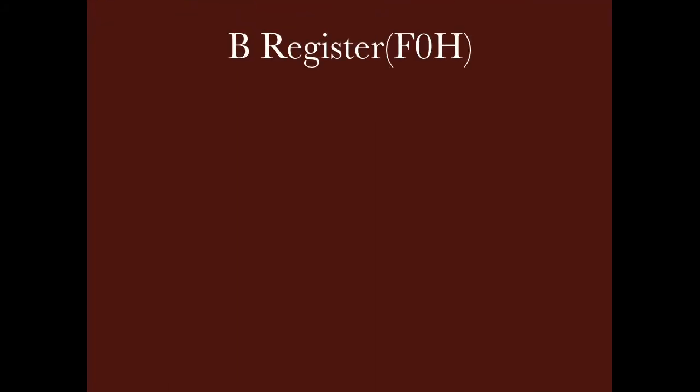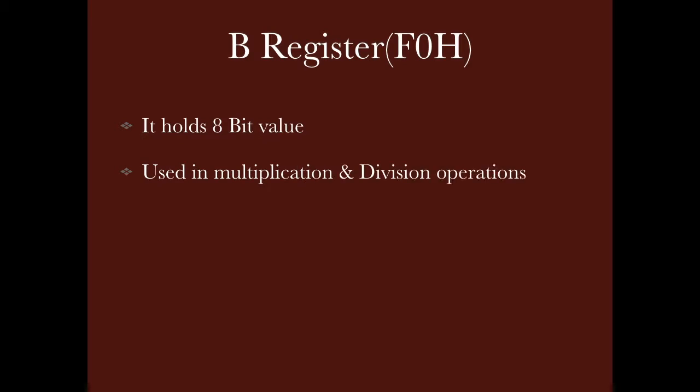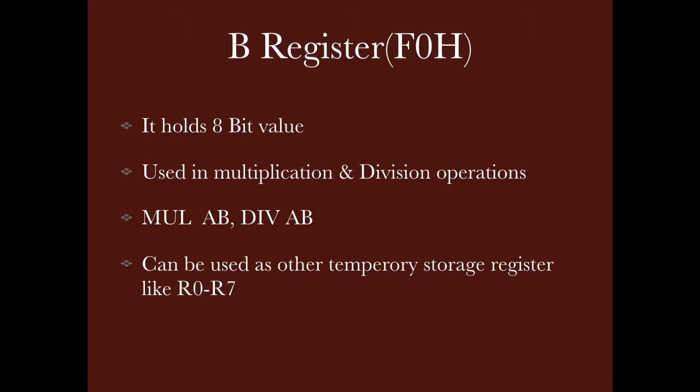Now let's go to register B, which is at the F0H location of RAM. This is also an 8-bit register. It is specifically used in multiplication and division operations, where it is used together with the accumulator A. These are instructions like MUL AB or DIV AB. Otherwise, we can use R0 to R7 as general-purpose registers.